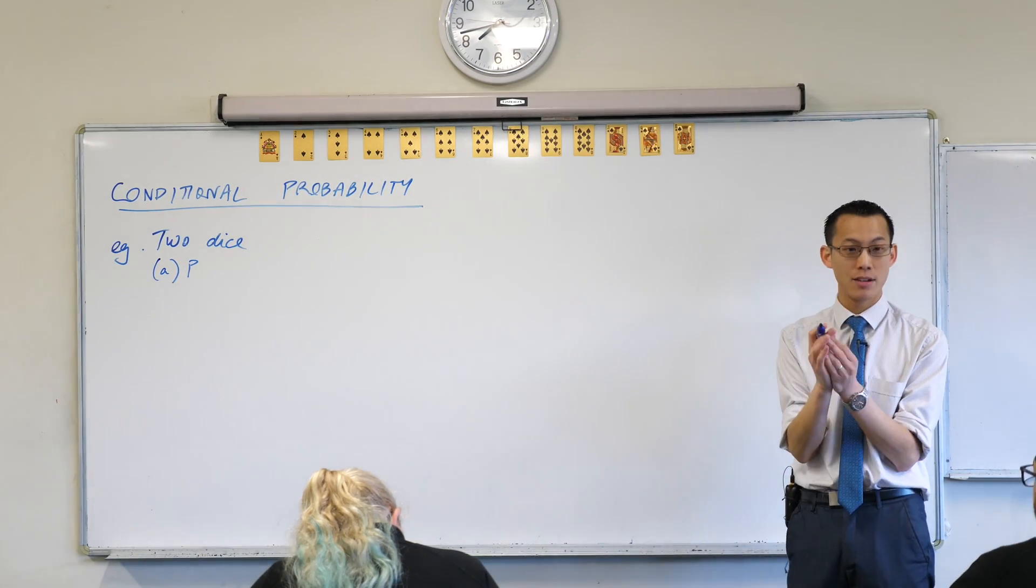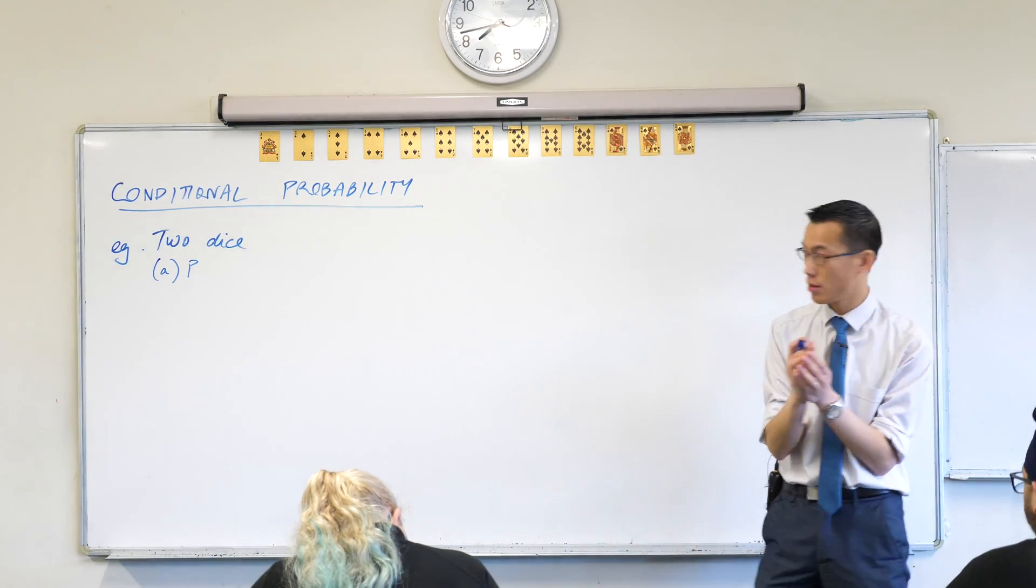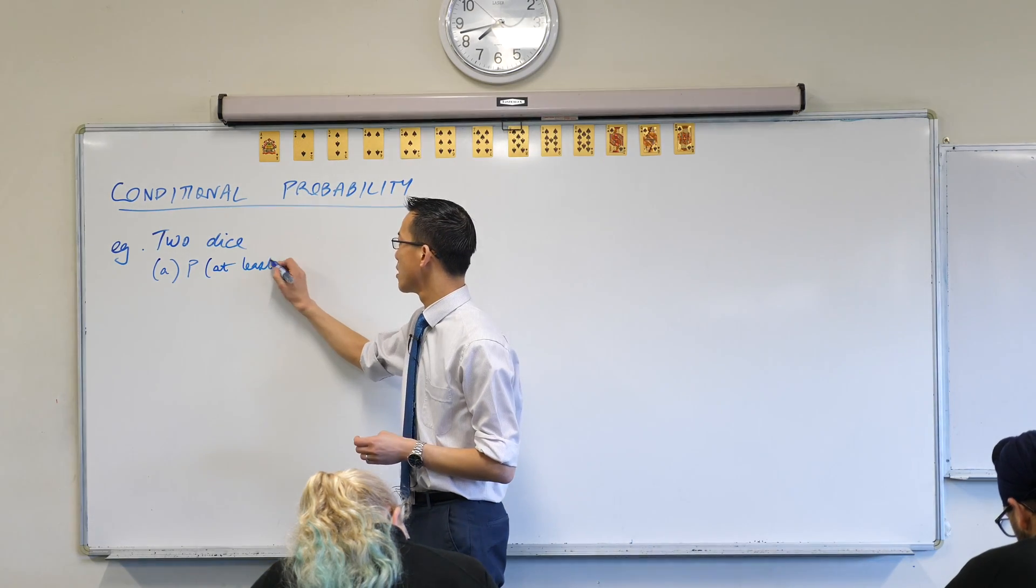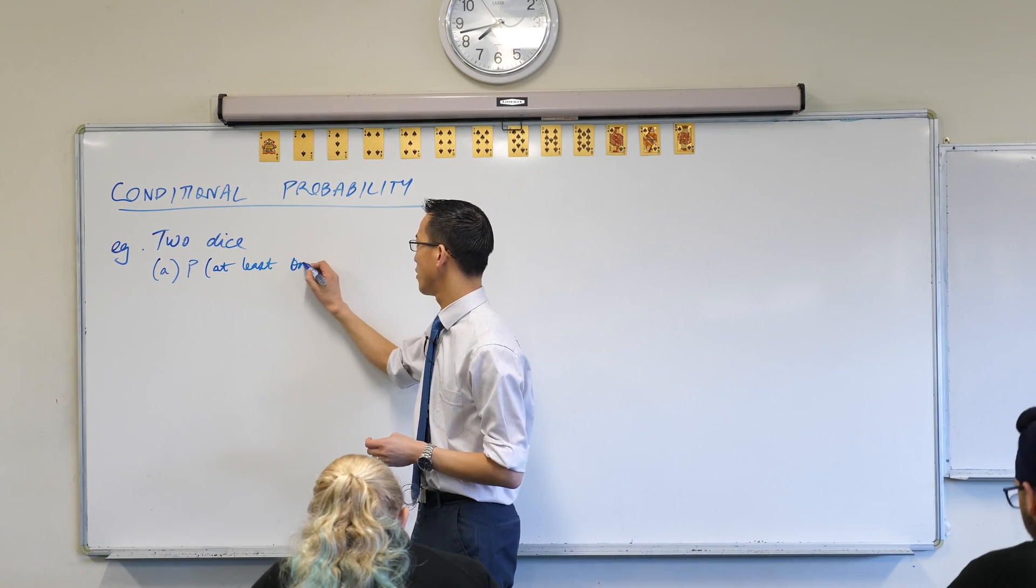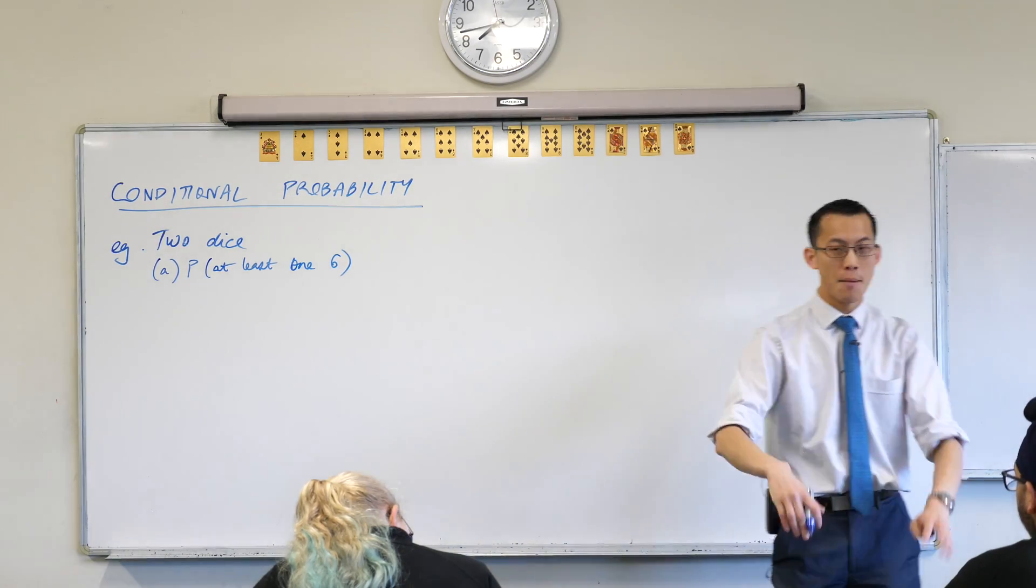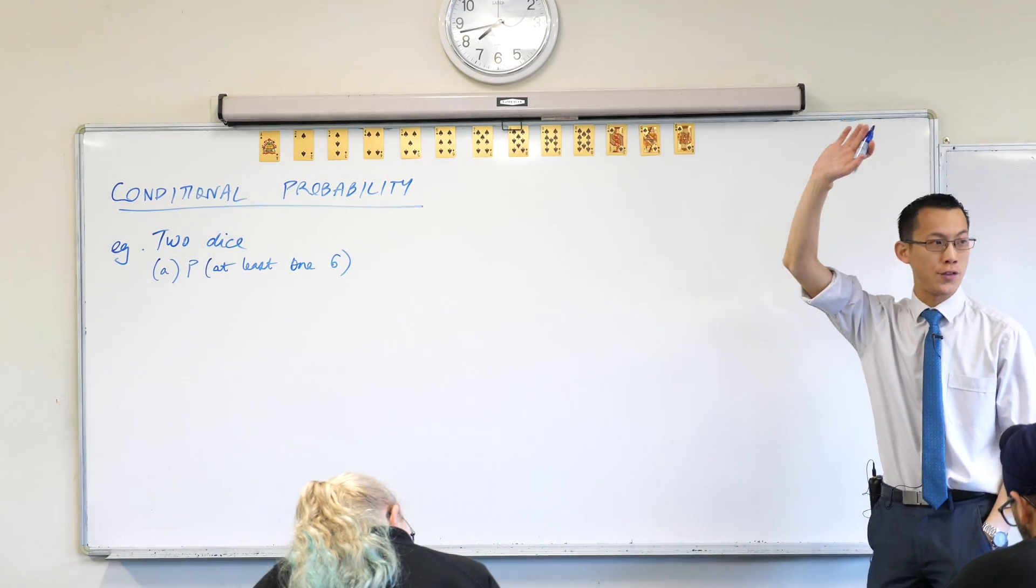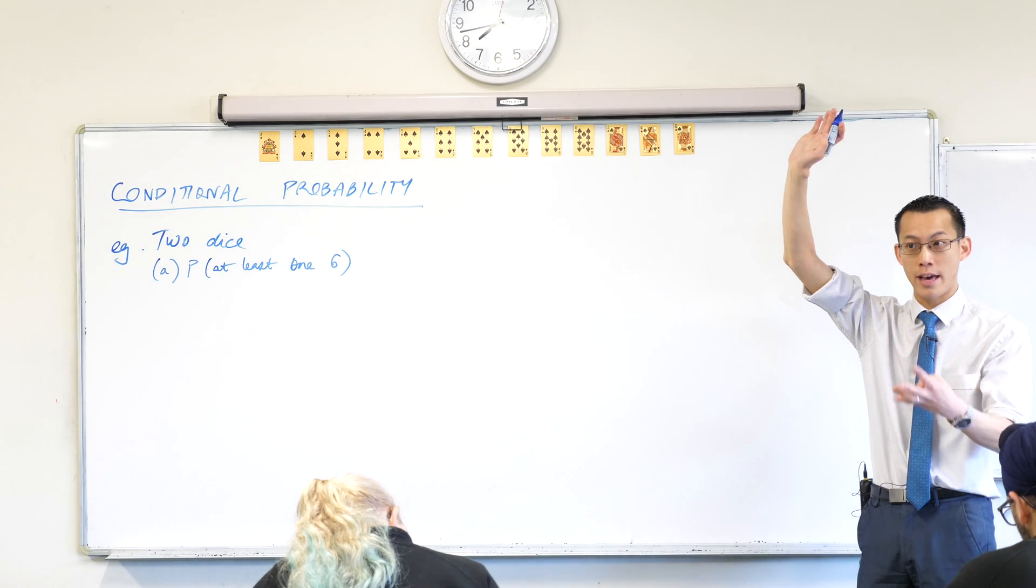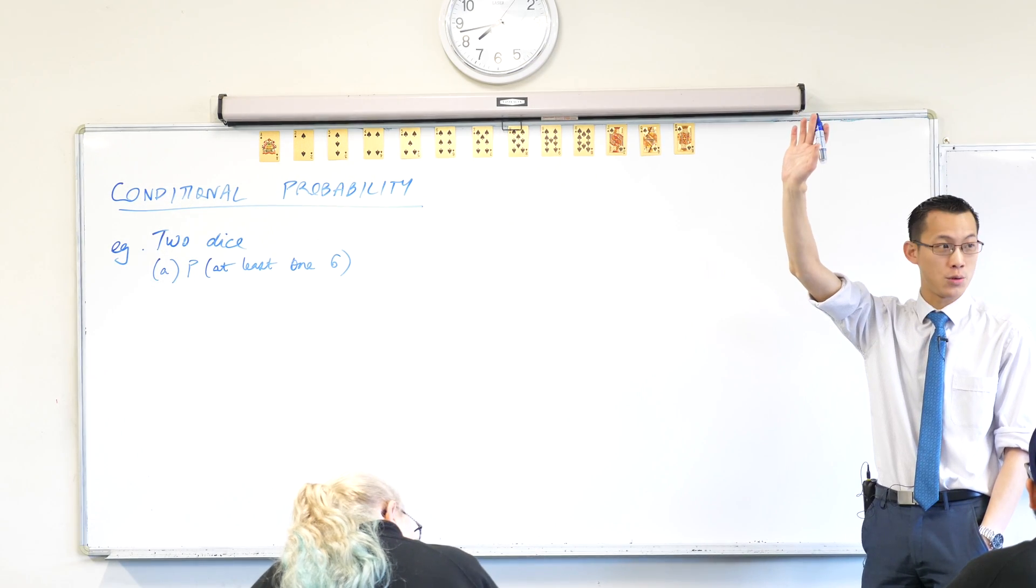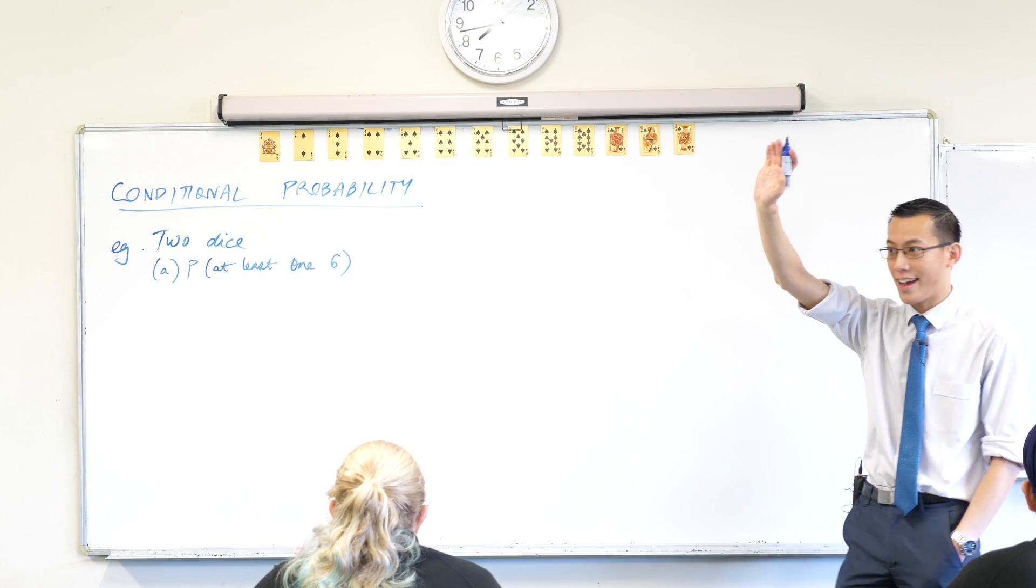Here's my first question for you: what's the probability that at least one of the dice will be a six? What is the probability of at least one six? Don't tell me the answer, but raise your hand if you feel like you have an instinctive quick response to that. I'm not going to ask what it is, I just want to get a sense of who's got one.